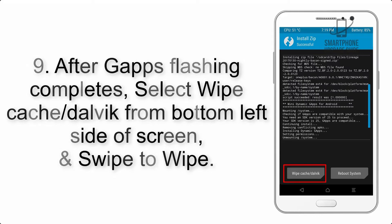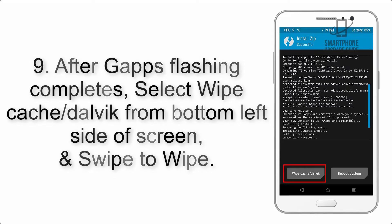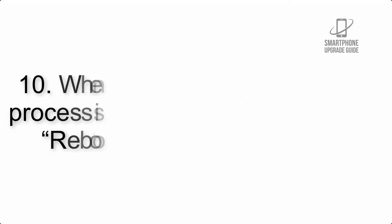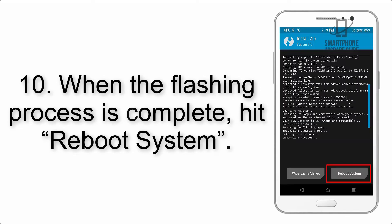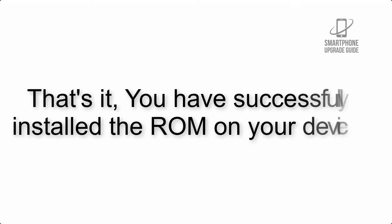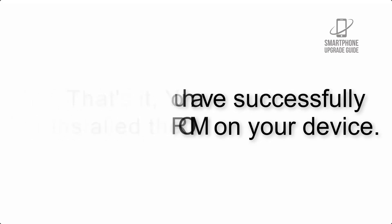Step 9: After GApps flashing completes, select Wipe Cache and Dalvik from the bottom left side of the screen and swipe to wipe. Step 10: When the flashing process is complete, hit Reboot System. That's it — you have successfully installed the ROM on your device.